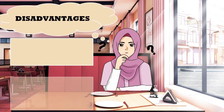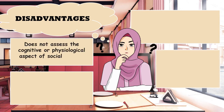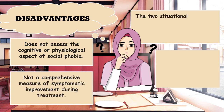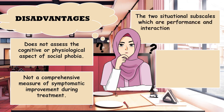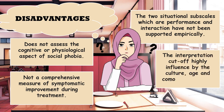Disadvantages: it does not assess the cognitive or psychological aspects of social phobia. It is also not a comprehensive measure for symptomatic improvement during treatment. The two situational subscales — performance and interaction — have not been supported empirically. The interpretation cut-off is highly influenced by culture, age, and comorbid diseases.